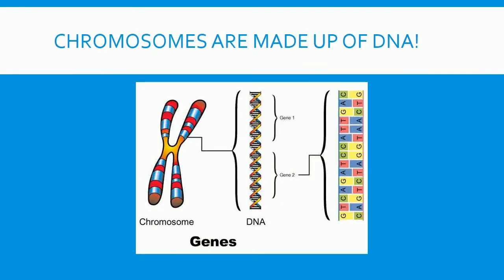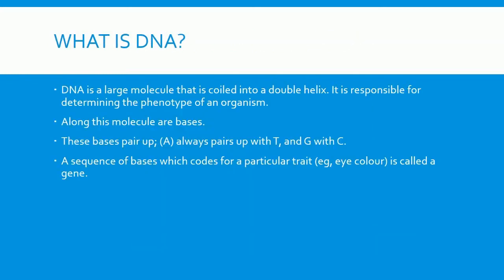Chromosomes are made up of DNA. DNA is a large molecule that is coiled into a double helix. It is responsible for determining the phenotype of an organism. Along this molecule are bases. These bases pair up: A always pairs with T, and G with C.